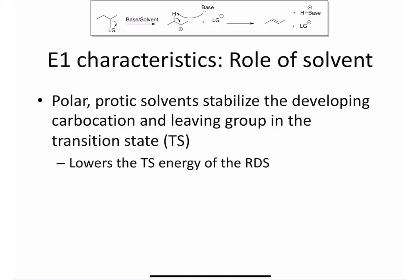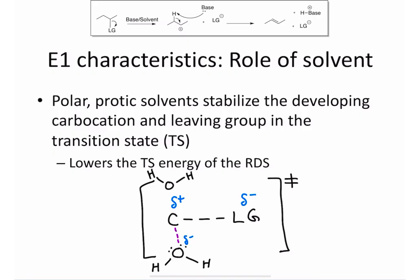The solvent has the role of the base and has another role in the reaction as well. Polar protic solvents can stabilize the developing carbocation and the leaving group in the transition state. Remember that in the transition state, the leaving group is starting to break away. Its delta plus carbon is becoming a carbocation, and carbocations are unstable. What we find in the transition state structure is an interaction between the lone pair on the heteroatom, like oxygen that I've drawn here, and the carbon. Negative attracts positive, which helps stabilize the developing positive charge.